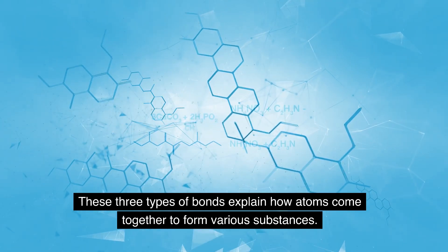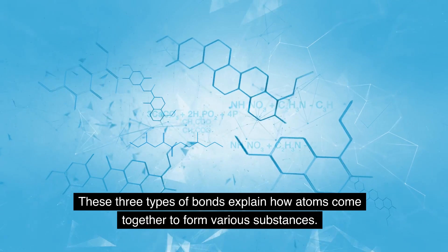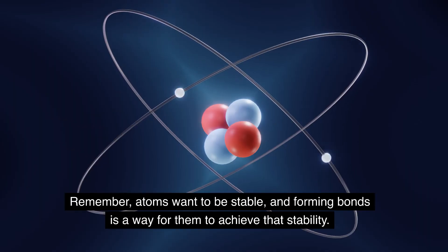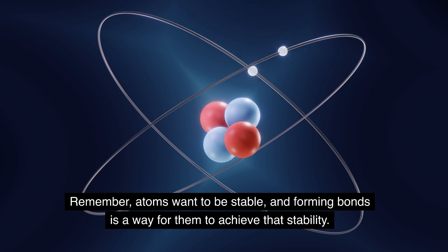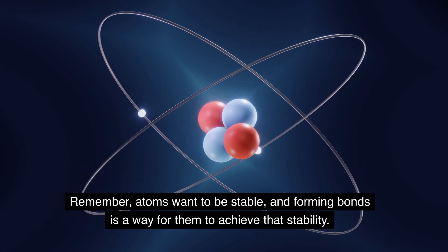These three types of bonds explain how atoms come together to form various substances. Remember, atoms want to be stable, and forming bonds is a way for them to achieve that stability.